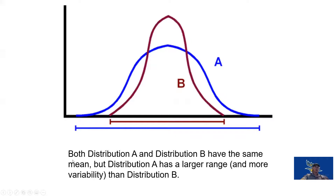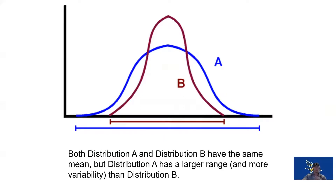Looking at curves A and B, they have the same mean, but A has a larger range compared to B — the low and high scores in A are further apart than in B. That means curve A has more variability compared to curve B, which has less variability because there's less difference between those scores.